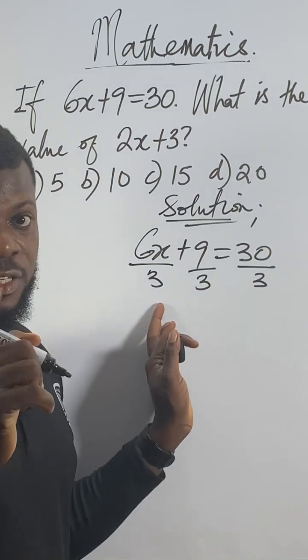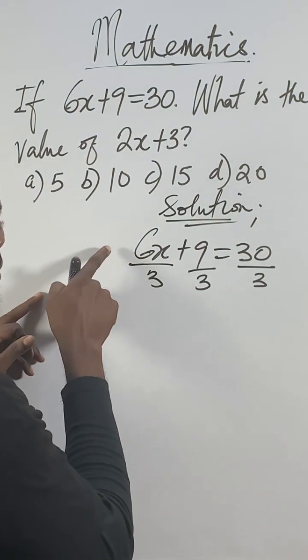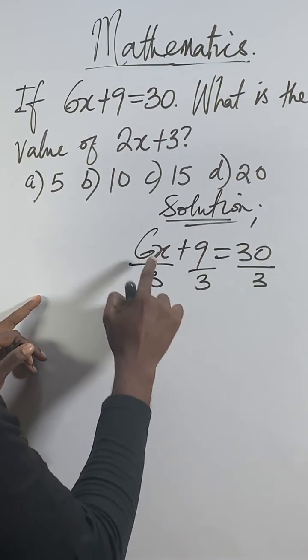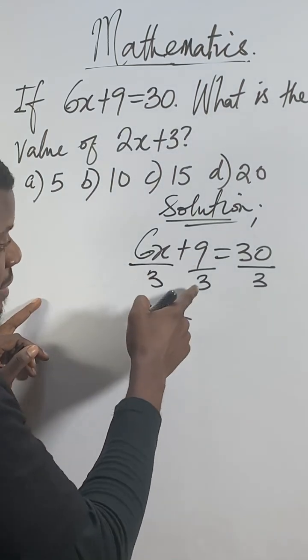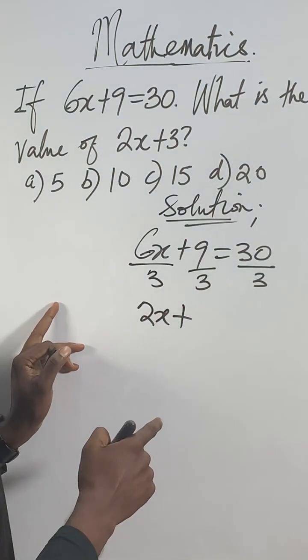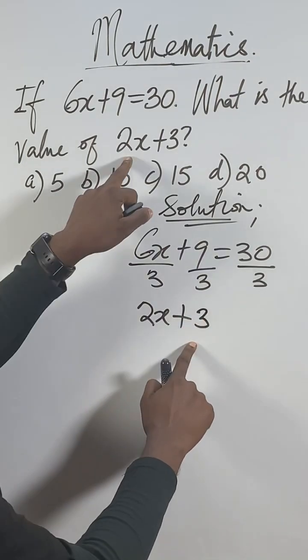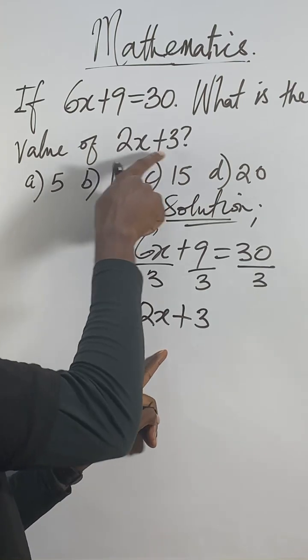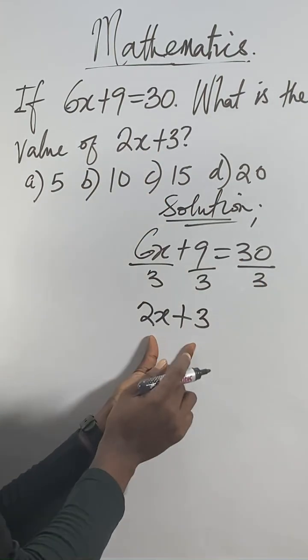Remember I said you can solve this thing in 15 seconds. Watch to the end. 6 divided by 3 is 2. 2x. 9 divided by 3 gives 3. So we get 2x plus 3. This is exactly what they're asking for. And remember they asked you what is the value of 2x plus 3.